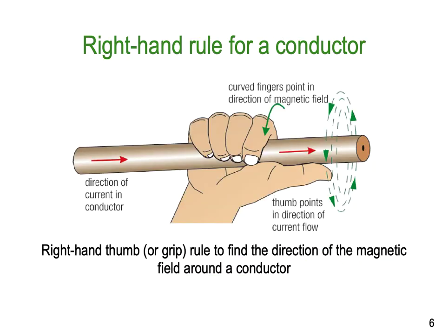Here's the right-hand grip rule. Simply, if you grab the conductor in your right hand and grip it with your fingers, with your thumb lying in the direction of current flow down the conductor, then the curve of your fingers will point in the direction of the magnetic field and your thumb points in the direction of the current. So if you know the direction of the current, you can determine the direction of the magnetic field — or if you know which way the magnetic field is going, your thumb will tell you the direction of the current. The right-hand thumb or grip rule finds the direction of a magnetic field around a conductor and also the direction of the current if you know the direction of the field.